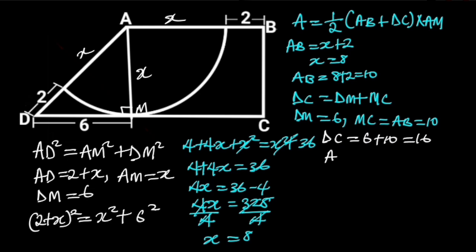And AM is equal to 8. If we substitute these values in the above formula, we will have one-half times (10 plus 16) times 8. 10 plus 16 is 26, so we have one-half times 26 times 8. 26 divided by 2 is 13, so we are left with 13 times 8, which is equal to 104.